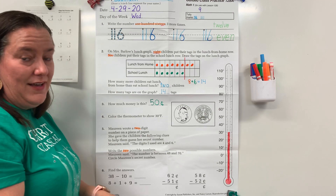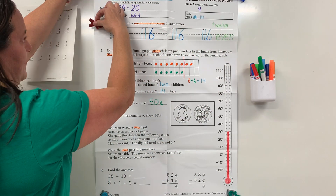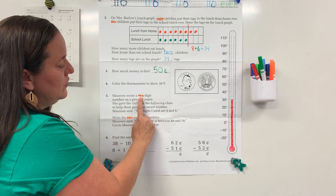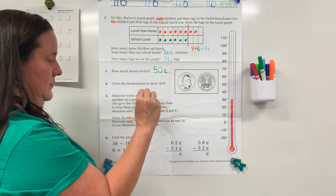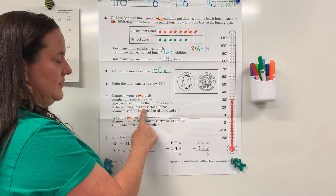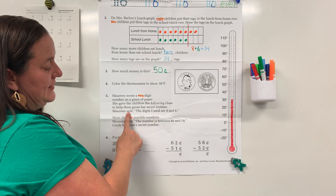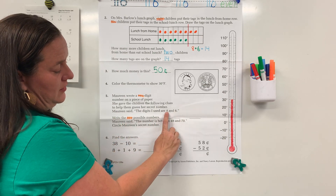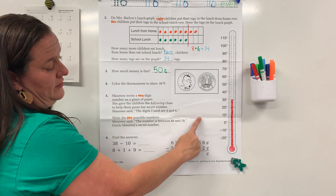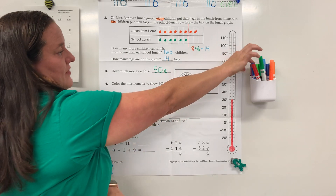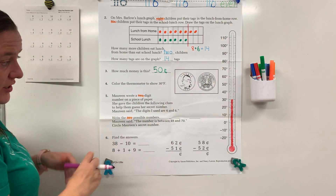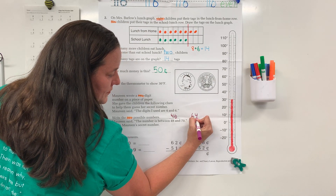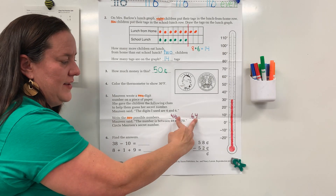Do the quarter problem and the thermometer problem on the back. Number five: Maureen wrote a two-digit number on a piece of paper. She gave the children the following clues to help them guess her secret number. Maureen said the digits she used are four and six. The two possible numbers — she could have written the four and then the six, or she could have written them in the other order: six then four. So we've narrowed it down to two possible answers.